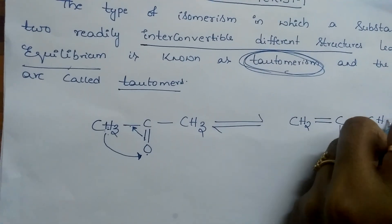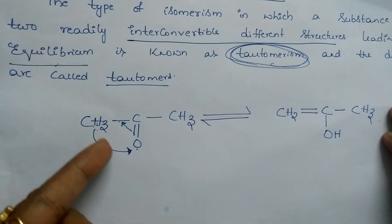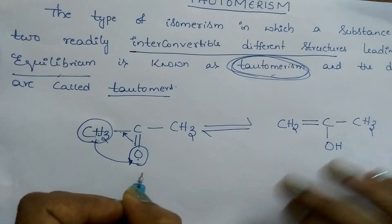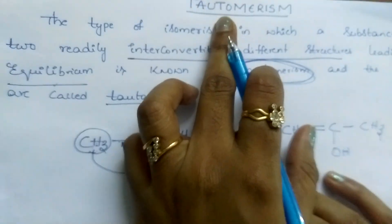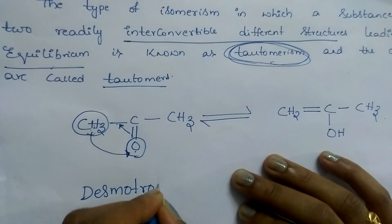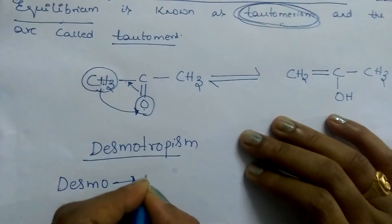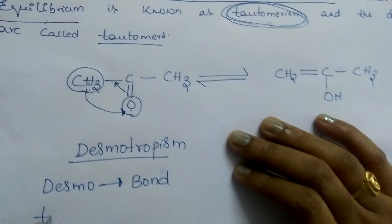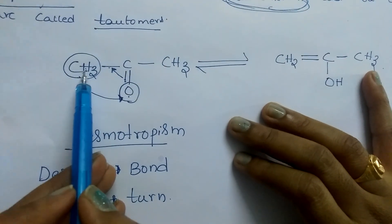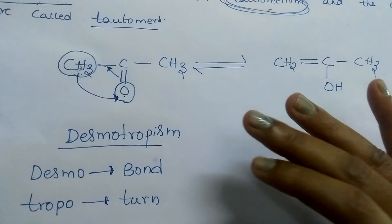This part is written as it is. Here the bond is turning because of the migration of this hydrogen from this polyvalent atom to this polyvalent atom. That is why this tautomerism is also called desmotropism — because according to Greek, 'desmo' means bond and 'tropo' means turn. Because of the migration of the hydrogen, the bond turns from here to here, that is why it is called desmotropism.